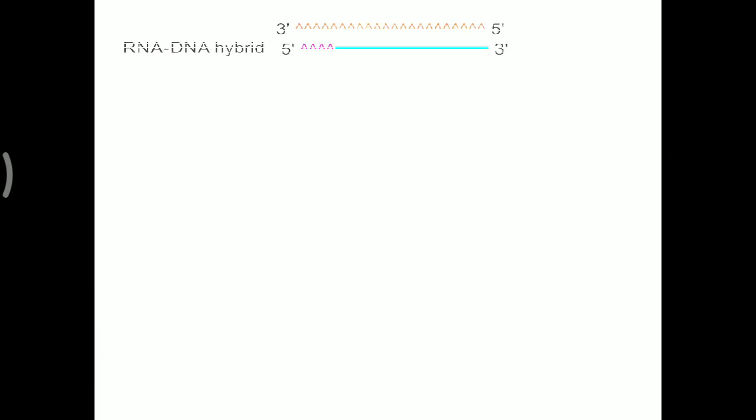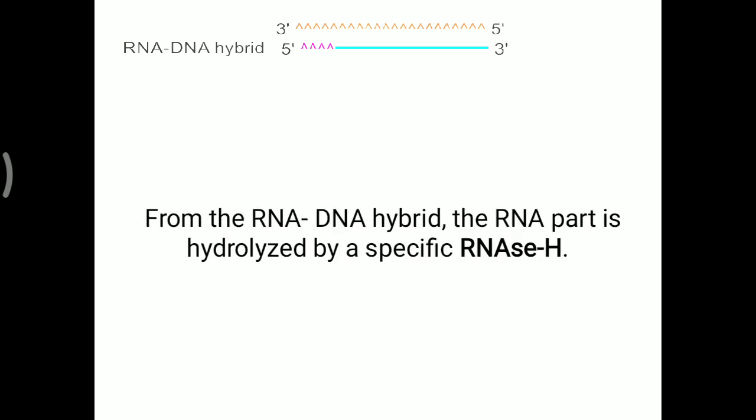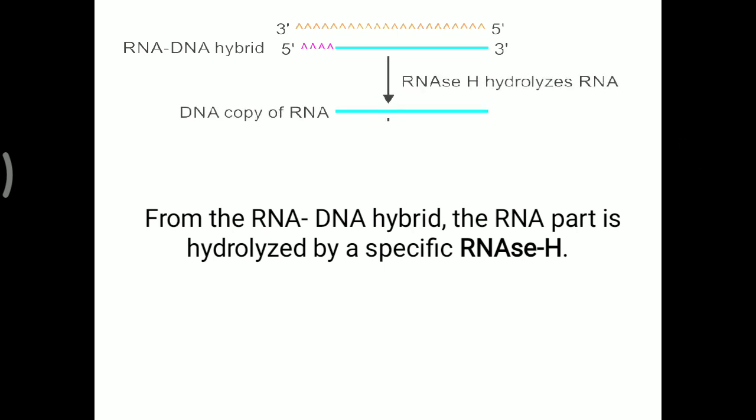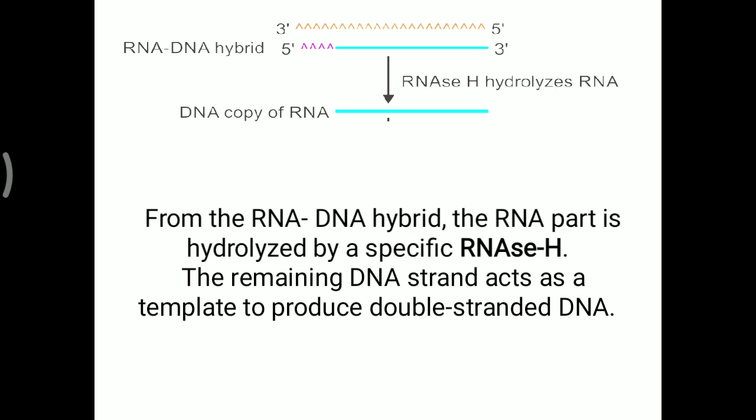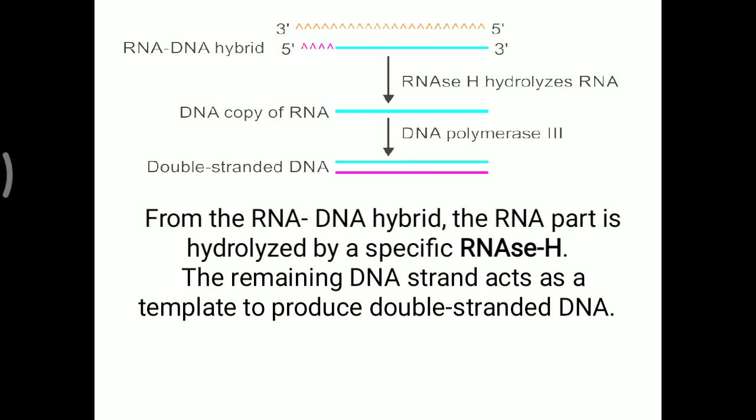From this RNA-DNA hybrid, the RNA part is hydrolyzed by a specific RNase H enzyme. RNase H hydrolyzes and removes the RNA part from the hybrid molecule, and only a single-stranded DNA molecule remains. So a DNA copy of the RNA is present. The remaining single-stranded DNA then acts as a template to produce double-stranded DNA, and finally a double-stranded DNA molecule is generated.